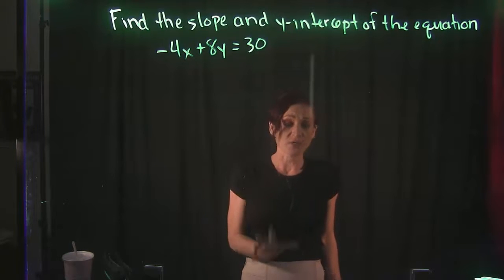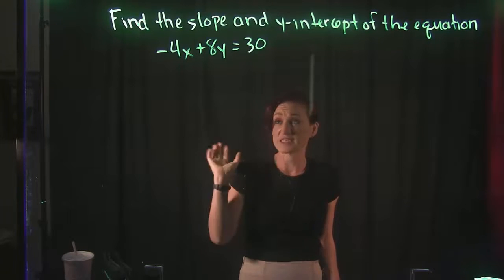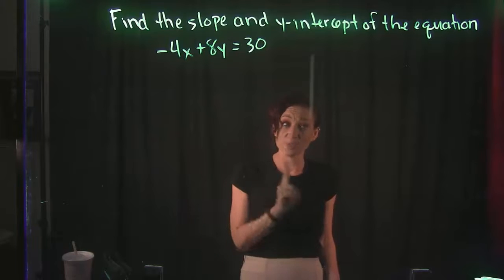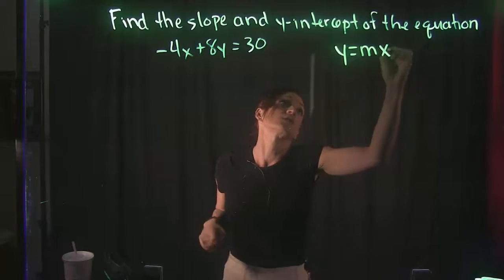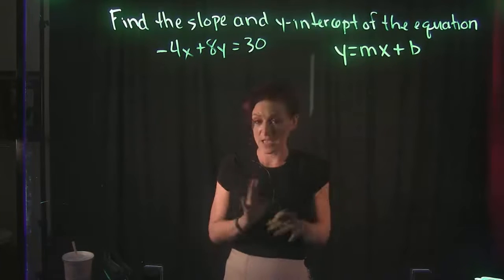If we need to find the slope and the y-intercept, the best thing for us to do is to take this equation and put it in slope-intercept form. This is slope-intercept form right over here: y = mx + b.